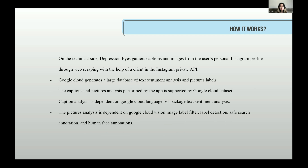On the technical side, the program gathers captions and images from the user's personal Instagram profile through web scraping with the help of a client in the Instagram private API. Google Cloud generates a large database of text sentiment analysis and picture labels. The caption analysis is dependent on Google Cloud Language V1 package text sentiment analysis, and all text input will receive a score from negative one to one — negative one being extreme negative and one being extreme positive.